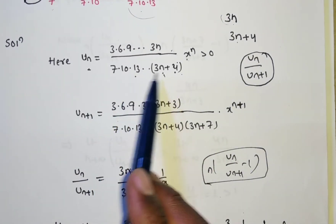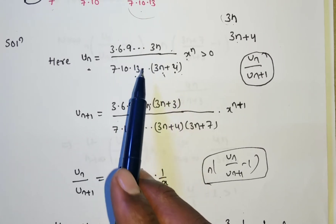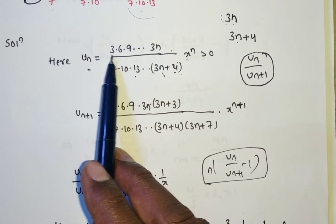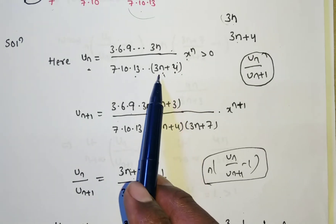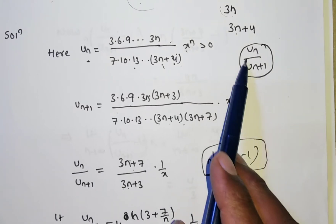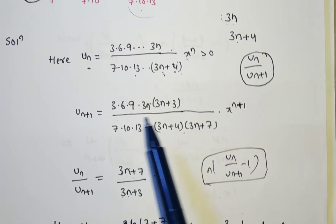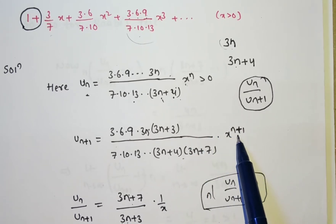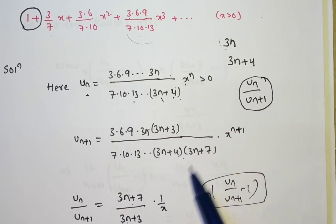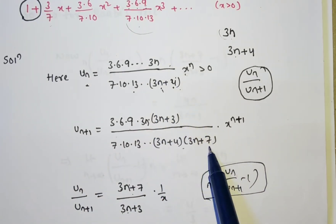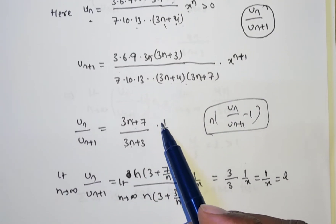Since this is a repeated series form, u_{n+1} contains the (n+1)th term. The numerator goes up to 3n, and the next term adds 3, so u_{n+1} has 3n·(3n+3) in the numerator and (3n+4)·(3n+7) in the denominator times x^{n+1}. For u_n / u_{n+1}, the common terms up to 3n in the numerator and up to (3n+4) in the denominator cancel. The x^n / x^{n+1} gives 1/x. The remaining denominator term 1/(3n+3)·(3n+7) gives reciprocal (3n+7)/(3n+3).